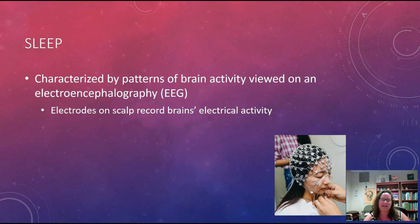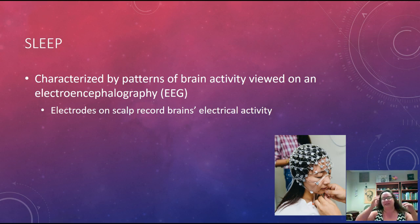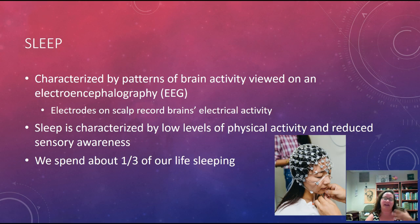We measure sleep using an EEG — an electroencephalograph. We put electrodes on someone's scalp, which record the brain's electrical activity, allowing us to see brain waves while people are sleeping. Sleep is characterized by low levels of physical activity and reduced sensory awareness.